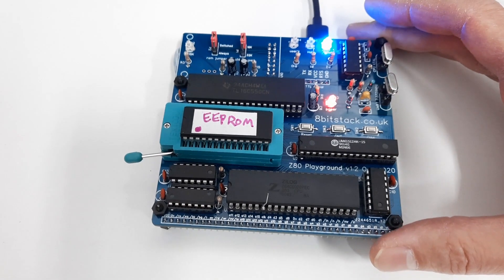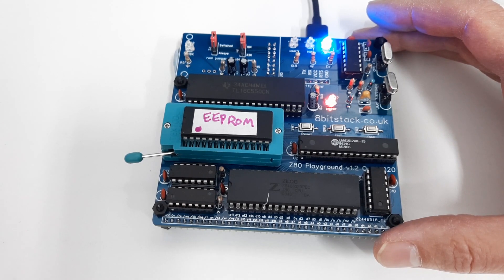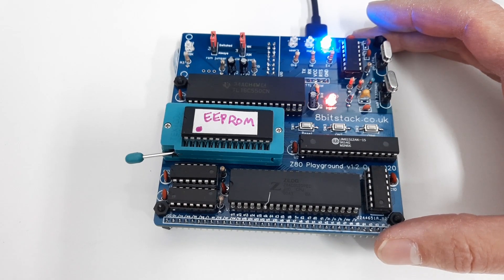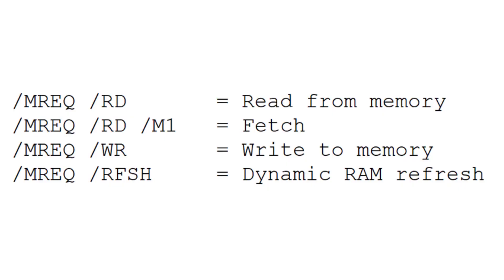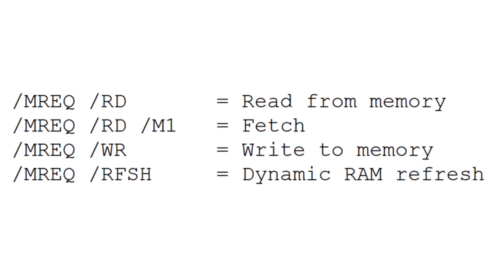The interrelationship between memory request, read, and write is quite straightforward, with just a little bit of extra complexity for the refresh signal. Memory request and read together means the CPU is reading from memory. One special case is memory request, read, and M1 going low simultaneously, which is the CPU fetching the first byte of an instruction — this only happens on the first byte even for a three-byte instruction. If memory request and write go low simultaneously, this is writing to memory. And if memory request and refresh go low simultaneously, this is part of the dynamic RAM refresh cycle.